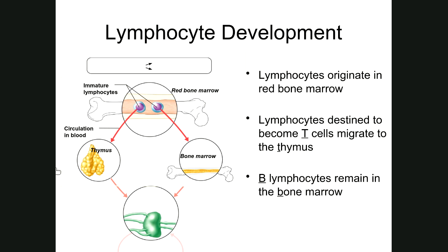The other major type of cell you're going to hear a lot about is what's known as a B lymphocyte or a B cell. B lymphocytes or B cells complete their development in the bone marrow, and that's the reason for their name — B cell or B lymphocyte.